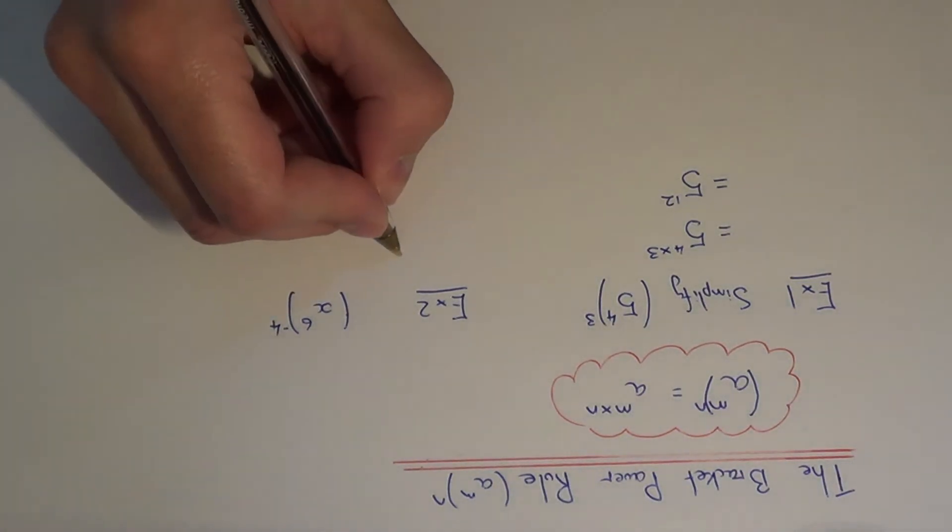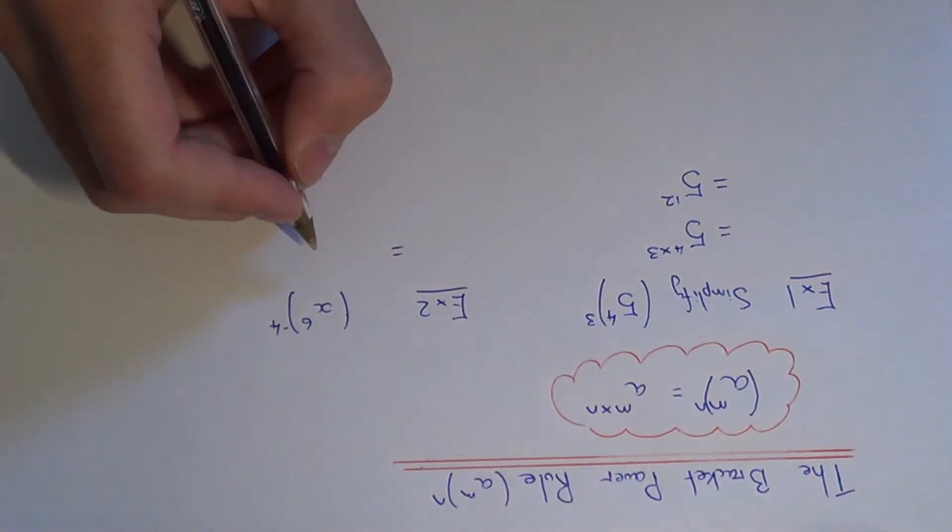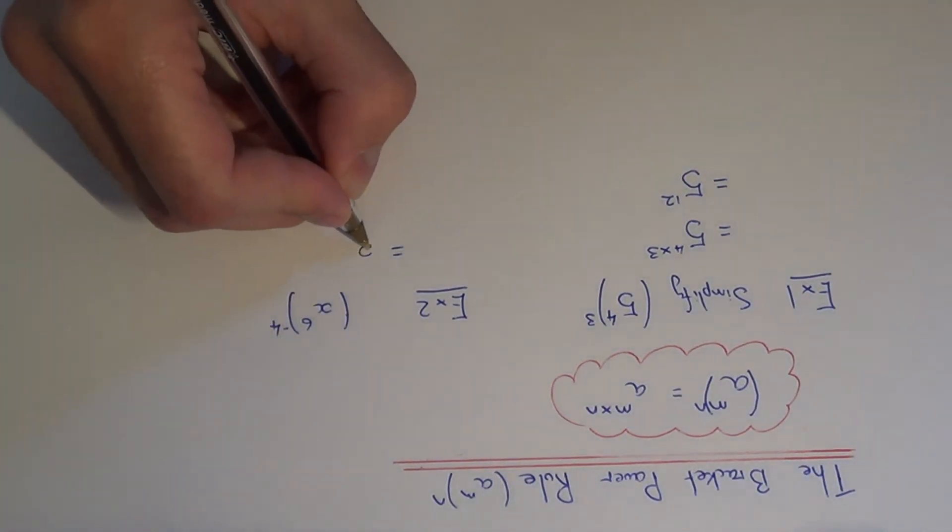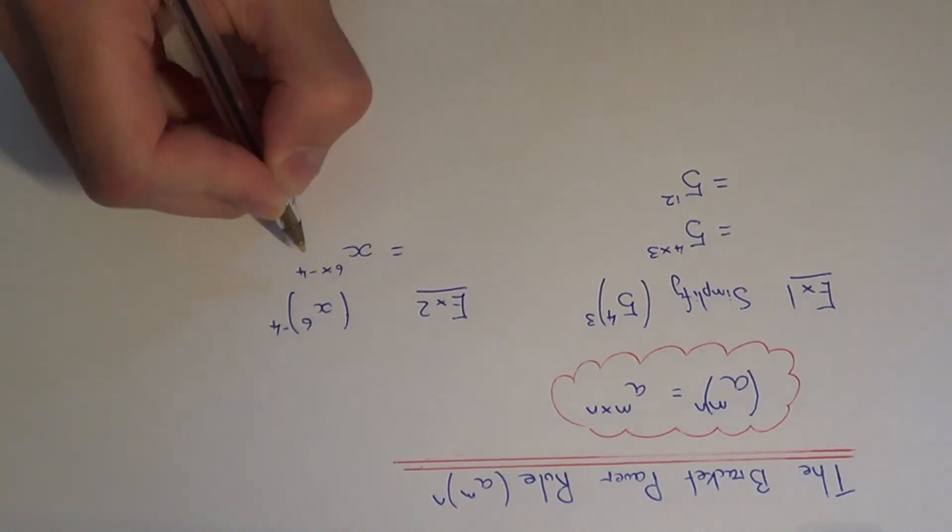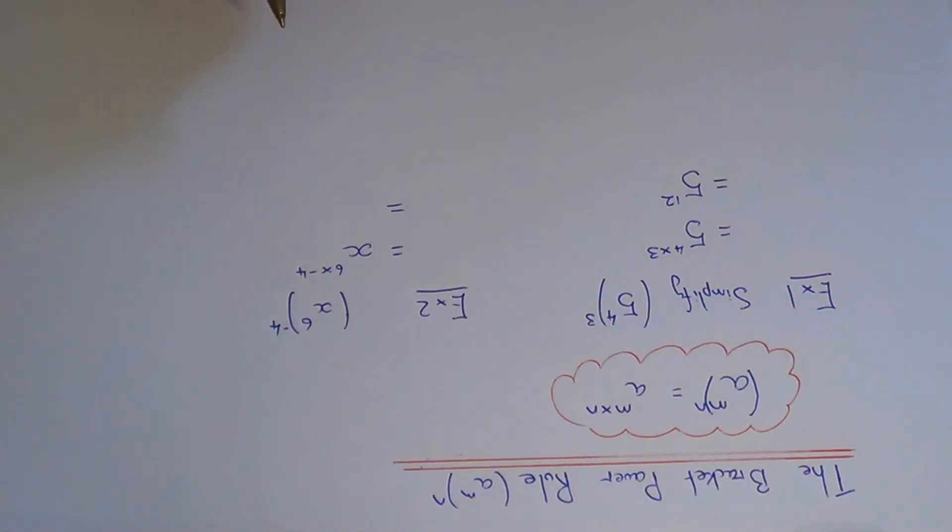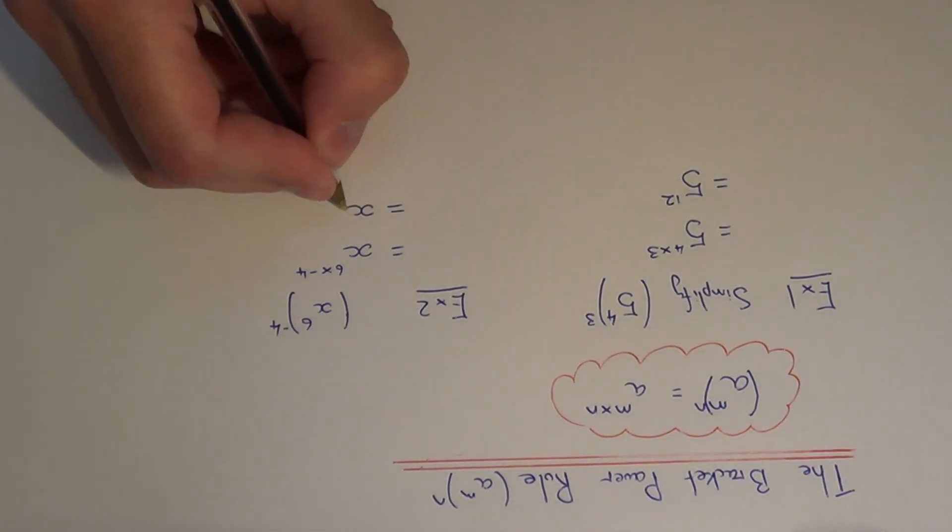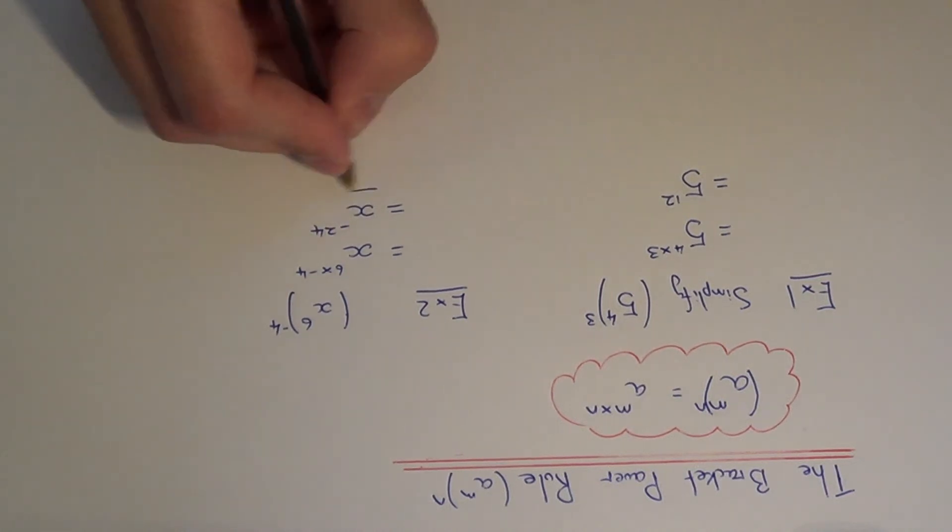Again, to simplify this we just need to multiply the two powers at the top. We need to work out six times minus four. Six times minus four would be minus twenty-four. So our final answer would be x to the power of minus twenty-four.